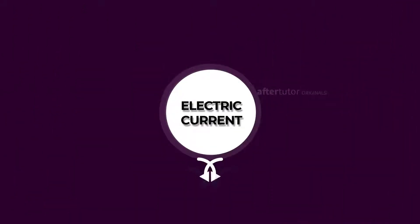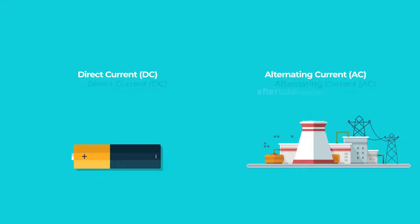This electricity is of two primary forms: direct current and alternating current. But how do these two things work, and where are they used?